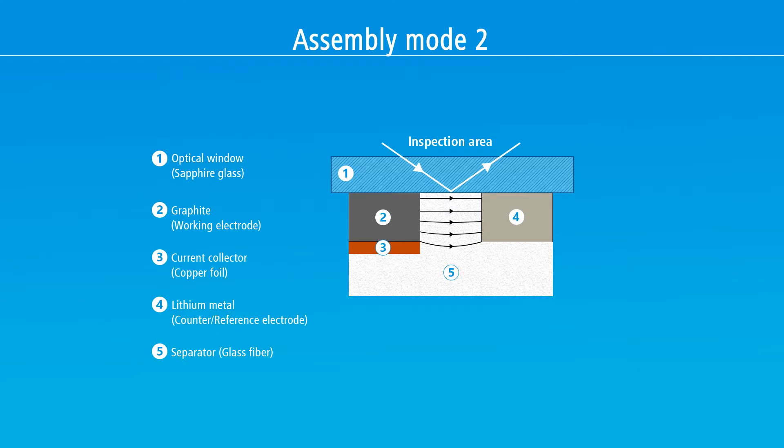This video explains another assembly mode of the ECC Optus standard test cell, referred to as mode number 2 in the manual. In this example, a 1 mm wide electrode strip cut from a conventional graphite electrode with copper foil current collector is being used as a working electrode.